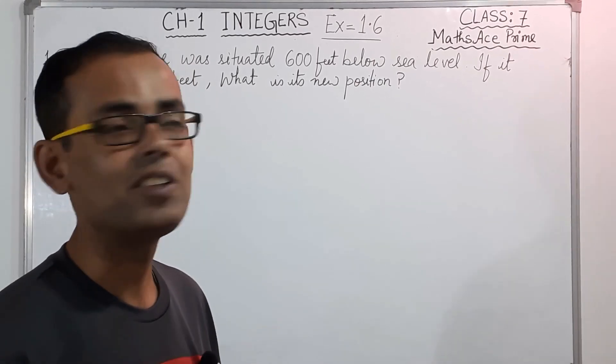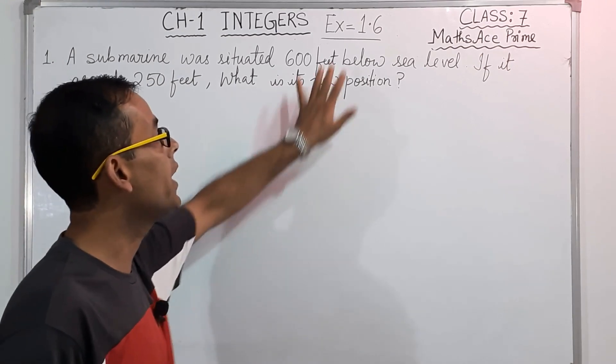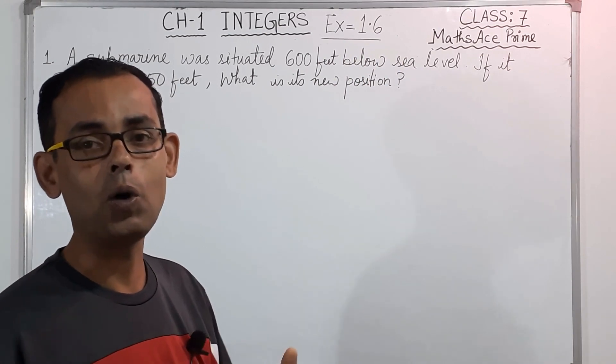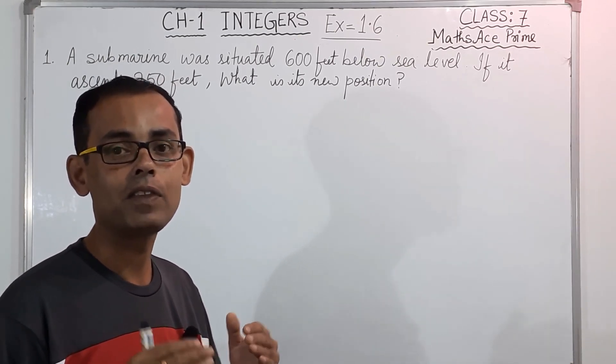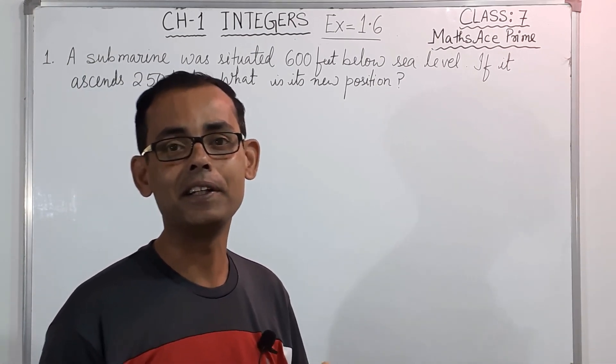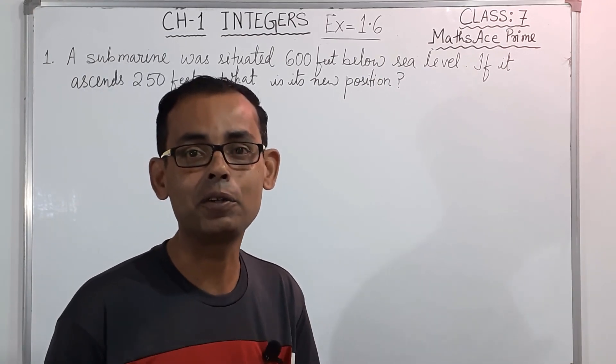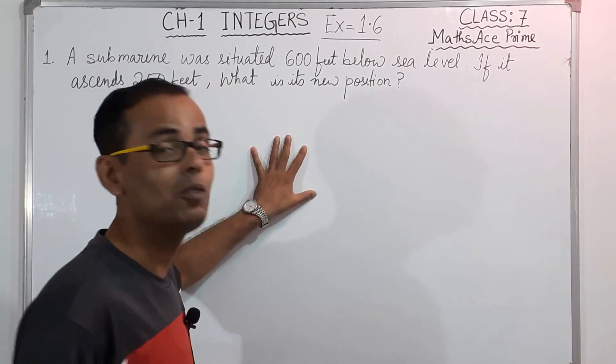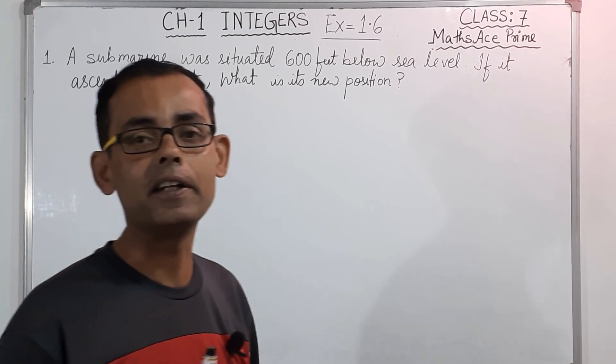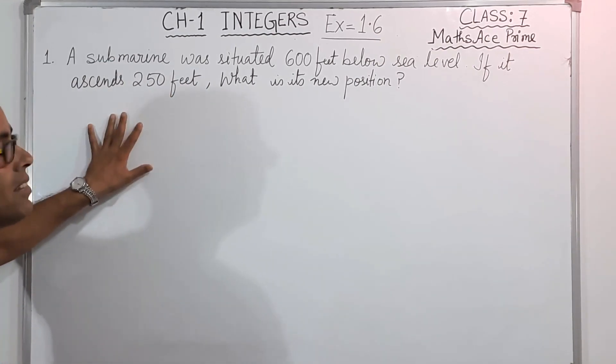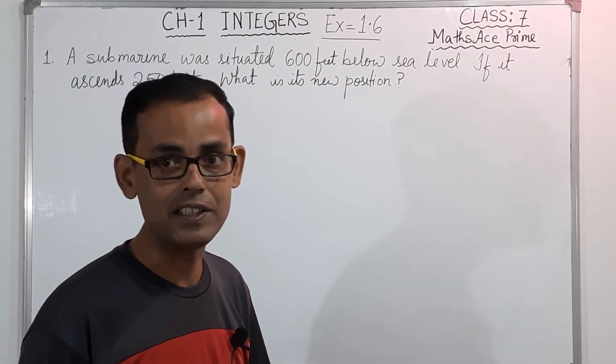Now today class 7 students we are again going to continue with the same chapter, chapter 1 integers. And today we are going to solve exercise 1.6. I would like to tell all my students that in our previous part, the previous part was part 16. There I started solving the workout sums. And then one of my students reminded me that sir you missed out 1.6. Yes, it's true. So for that I am very sorry and thank you for the student who reminded me to solve exercise 1.6. So we will just make a change that we will do first exercise 1.6 and then again we will continue with the workout sums. Okay, so let us see in exercise 1.6 what is the first question and today's part is part 17. Okay, so let's start.